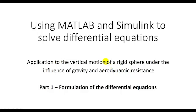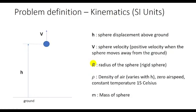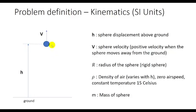Part one of this presentation will talk about the formulation of the differential equations. We define the problem as follows: we have a rigid sphere of radius r and mass m that is allowed to travel vertically through still air, assuming constant temperature of 15 degrees Celsius. We assume that the density of the air varies according to the altitude h. The position of the sphere is defined by the altitude h, which is the distance above ground, and the velocity of the sphere is defined by v. It is positive if the sphere is moving away from the ground and negative if moving towards the ground. All variables are defined using SI units.